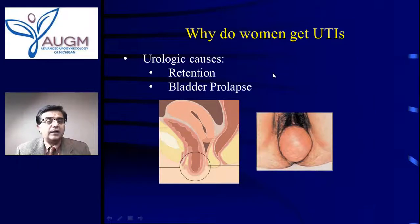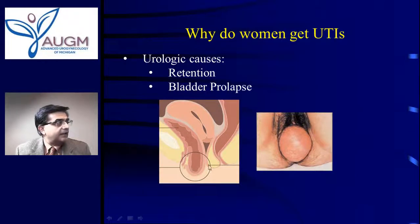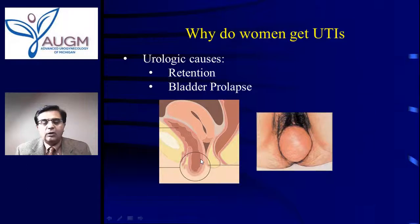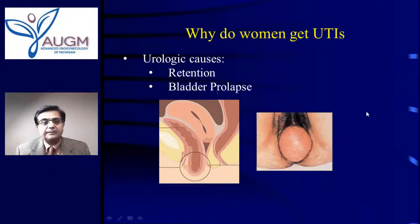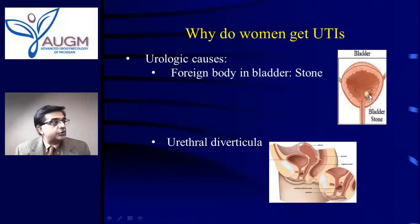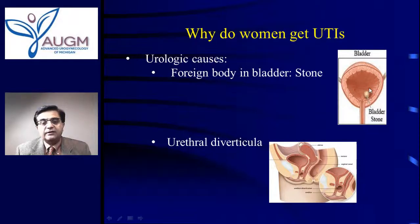There are also urological causes such as retention. A patient with prolapse where the bladder is coming down may not be emptying properly, leading to stagnant urine. Just as stagnant water breeds insects, stagnant urine breeds infection — bacteria remain there, start growing, and cause a bladder infection. Similarly, a bladder stone attracts bacteria, which grow around it and cause infection.